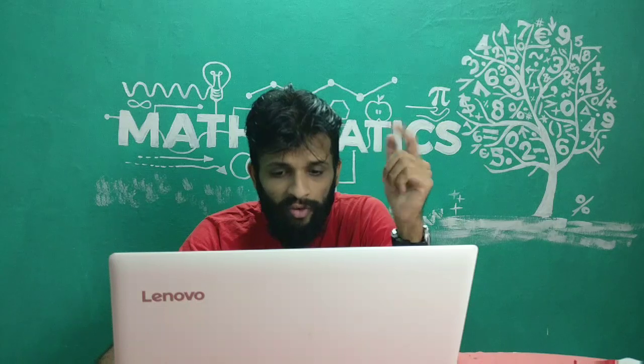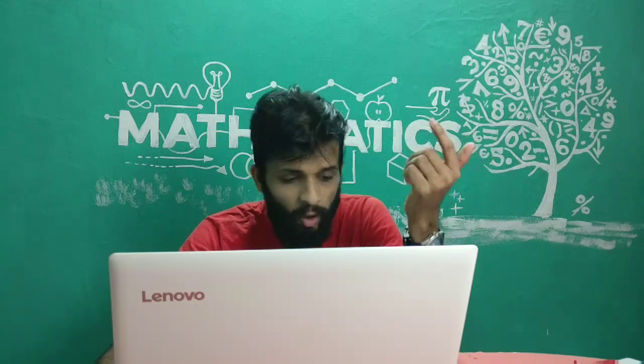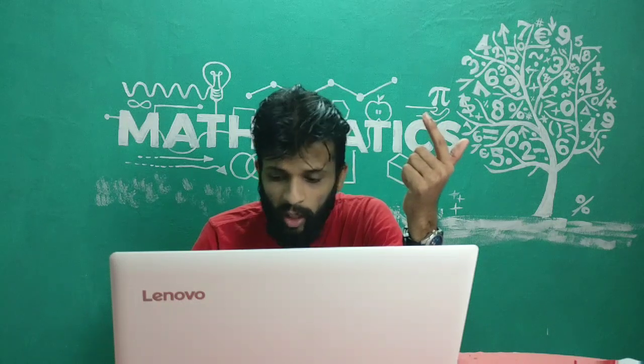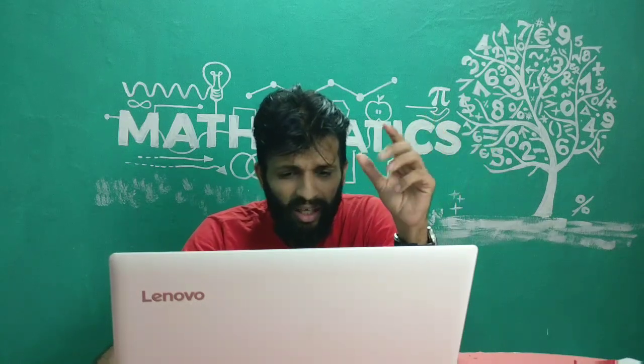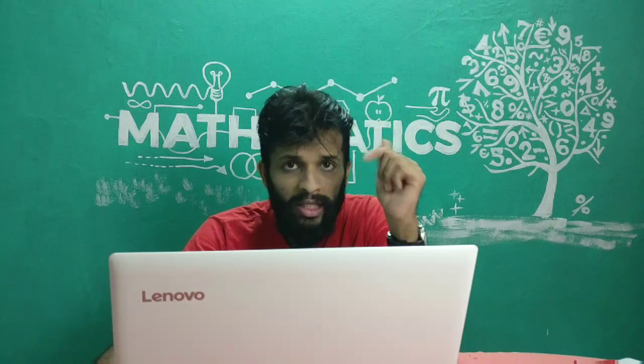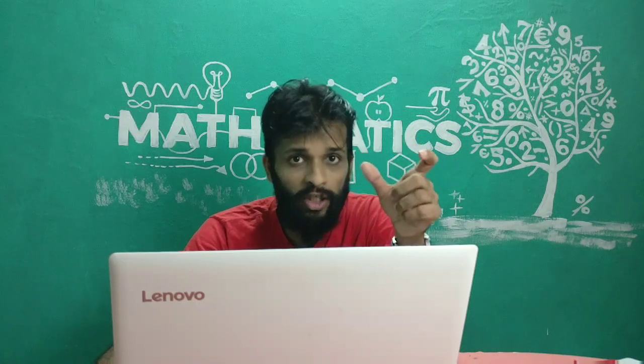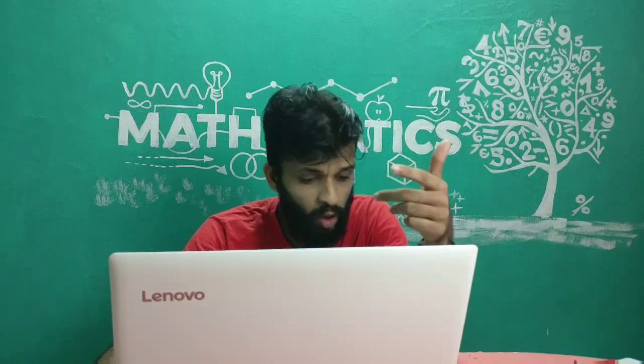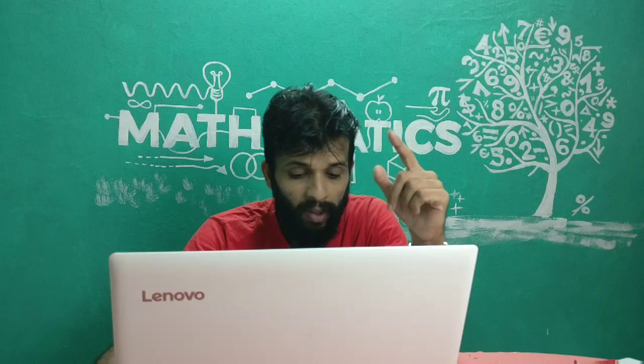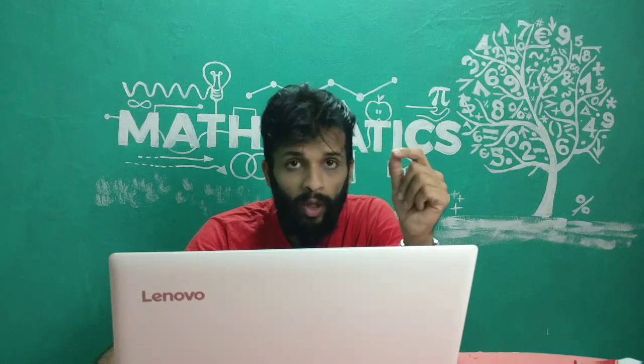The next question asks you to write the condition for which the pair of linear equations will have infinitely many solutions, and to find the value of k. The equations are 2x plus 5y equals 9 and 4x plus (k+1)y equals 18. You must write the general condition: a1/a2 equals b1/b2 equals c1/c2, then apply it to the given equations. Solving gives k equal to 9.